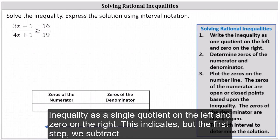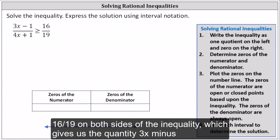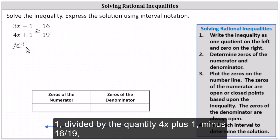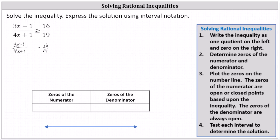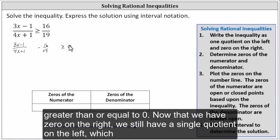This indicates for the first step we subtract 16/19ths on both sides of the inequality, which gives us the quantity (3x - 1) divided by the quantity (4x + 1) minus 16/19ths greater than or equal to zero.